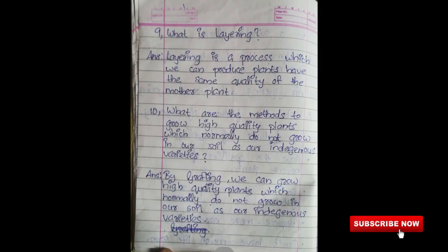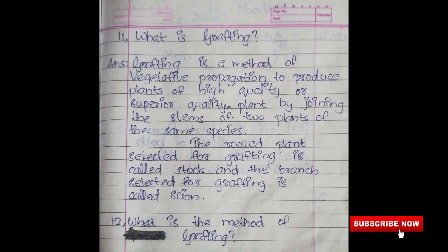Layering is a process by which we can produce plants having the same quality as the mother plant. Tenth question: What are the methods to grow high quality plants which normally do not grow in our soil as our indigenous varieties? Answer: By grafting. Grafting is a method of vegetative propagation to produce plants of high quality by joining the stems of two plants of the same species. The rooted plant selected for grafting is called the stock, and the branch selected for grafting is called the scion.